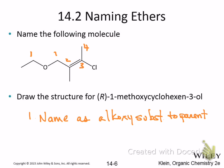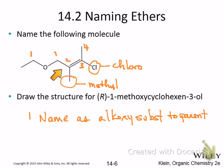I just need to name these substituents. There's one here and one here. This is methyl, right? This is chloro. This is part of the parent chain — a lot of people want to make that a substituent, but this is the double bond. So this is 2-butene. And this one is ethoxy — I should have done this one earlier.